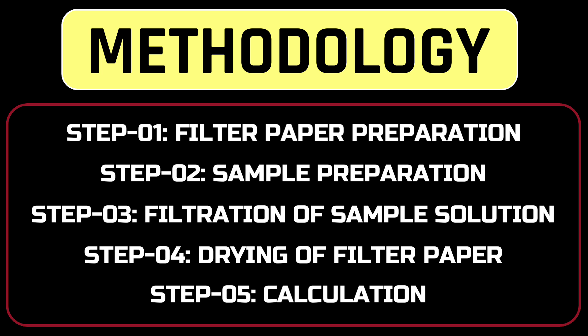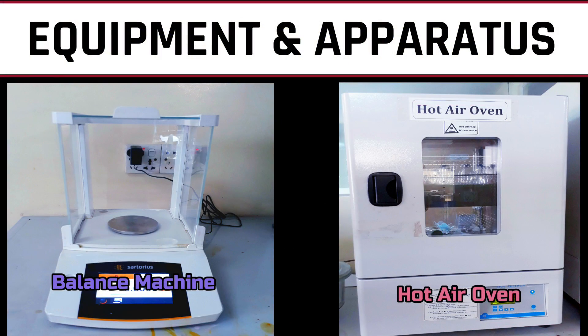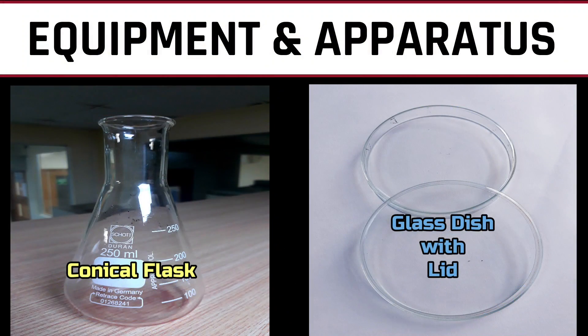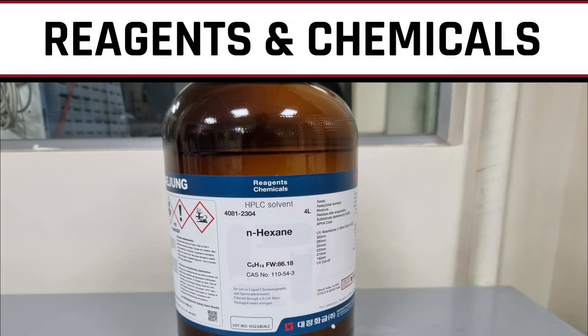To conduct this procedure we need a balance machine, hot air oven, conical flask, glass dish with lead funnel, desiccator, Whatman filter paper, and hexane.